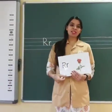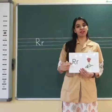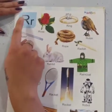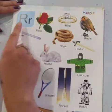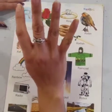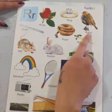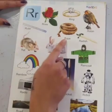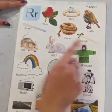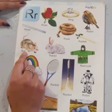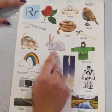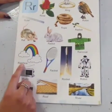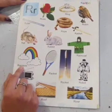Now let us see some vocabulary words related to letter R. Capital R, small r — R says R. R for rose. R for ring, which we wear on our fingers. R for robin — it's a bird. R for ruler. R for rope. R for radish. R for rat. R for rabbit. R for raincoat. R for rainbow — the beautiful rainbow that we can see in the sky.